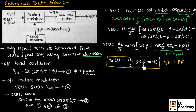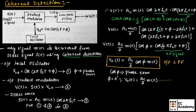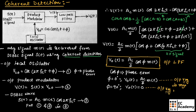Here, cos φ is the phase error. If φ = 0°, meaning there is no phase error, then V_0 of T = (A_c / 2) M of T, and the output voltage is maximum. If φ = 90°, then cos 90° = 0, so V_0 of T = 0 and the output voltage is minimum. This effect is known as the quadrature effect.